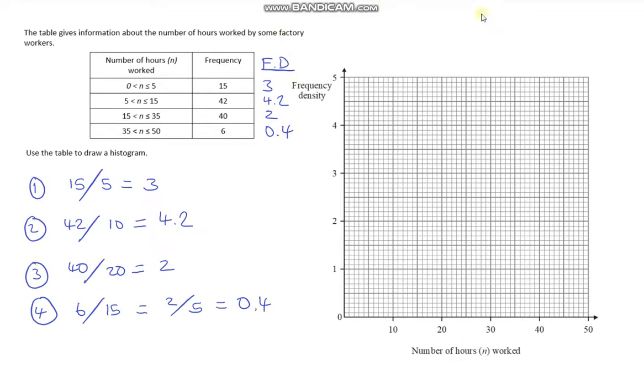Let me get my trusty line tool out. The first one from 0 to 5, we're going to go up to 3. Then along to the y-axis. I apologize if this has taken a bit longer with the line tool, but I want to be as accurate as I can be. From 5 to 15, we're going up to 4.2. That's 4.0, 4.1, 4.2. Then along and then down to here. The third one, we're going from 15 to 35, and then up to 2.